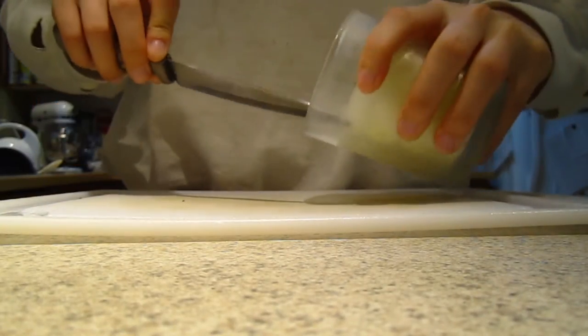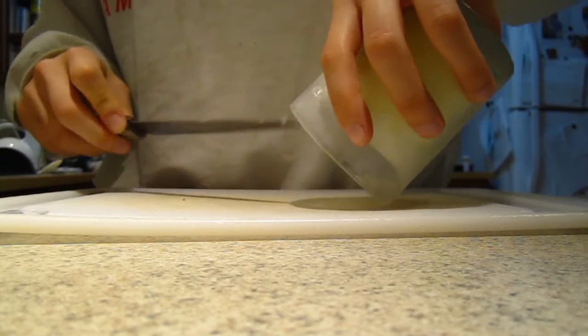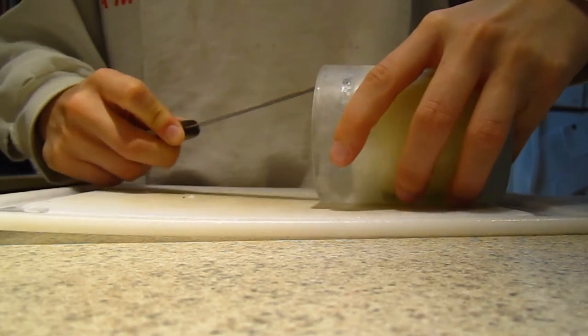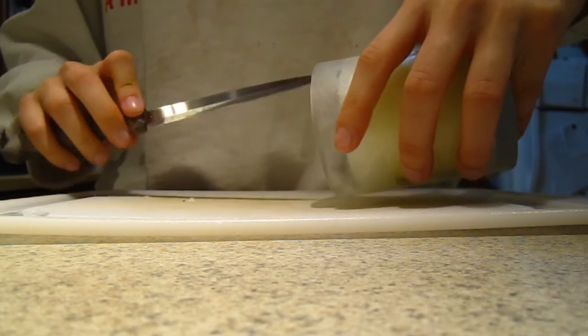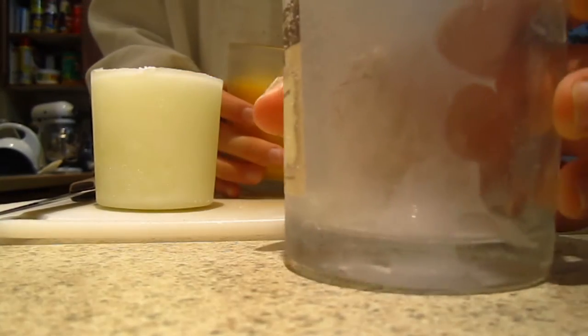To begin, first we take our dollar store candles out of their holders. If you let them sit in the freezer overnight this causes the wax to contract making it easier to clean out. If you opted for a glass container to fit inside your candle mold instead then you can luckily skip this step.